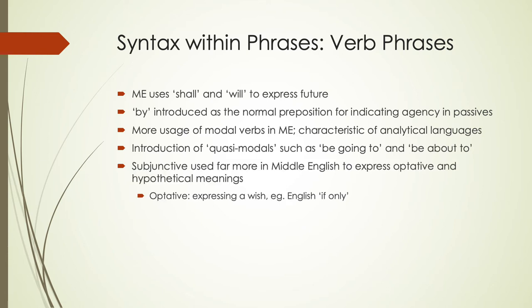Subjunctive is still used in Middle English to express optative and hypothetical meanings — optative expressing a wish, like 'if only something happened.' We don't see subjunctive very commonly in present-day English; it's still around and some people still use it, but it's not nearly as common in present-day English as what we're still seeing in Middle English.